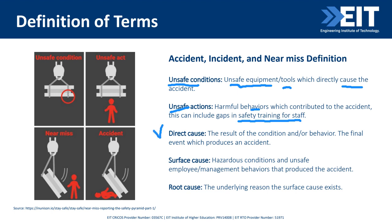Direct causes are the result of conditions and/or behaviors — the final event which produces an accident. Surface causes are hazardous conditions and unsafe employee or management behaviors that produce the accident. And root causes are the underlying reasons that surface causes exist.